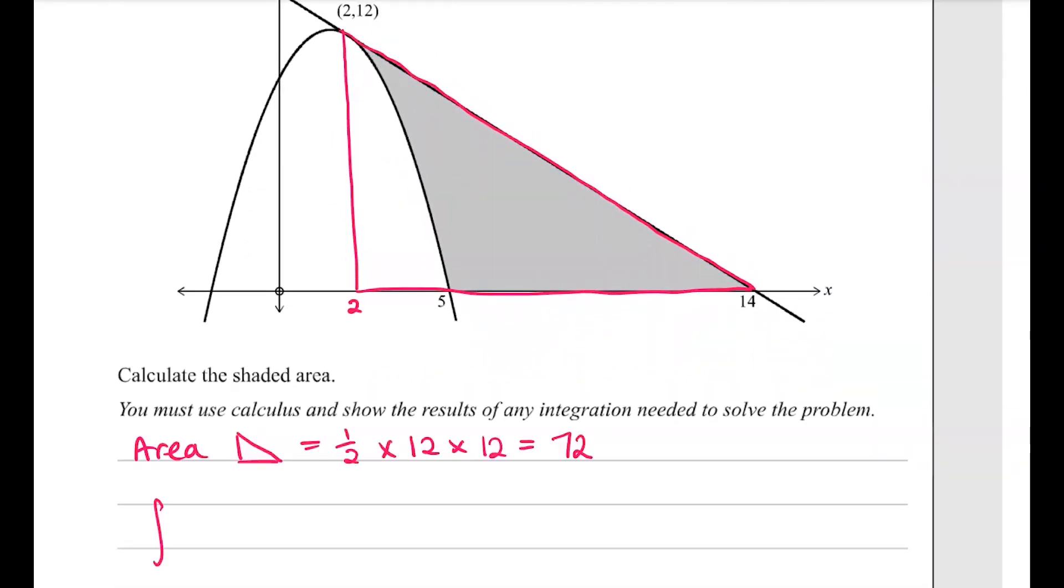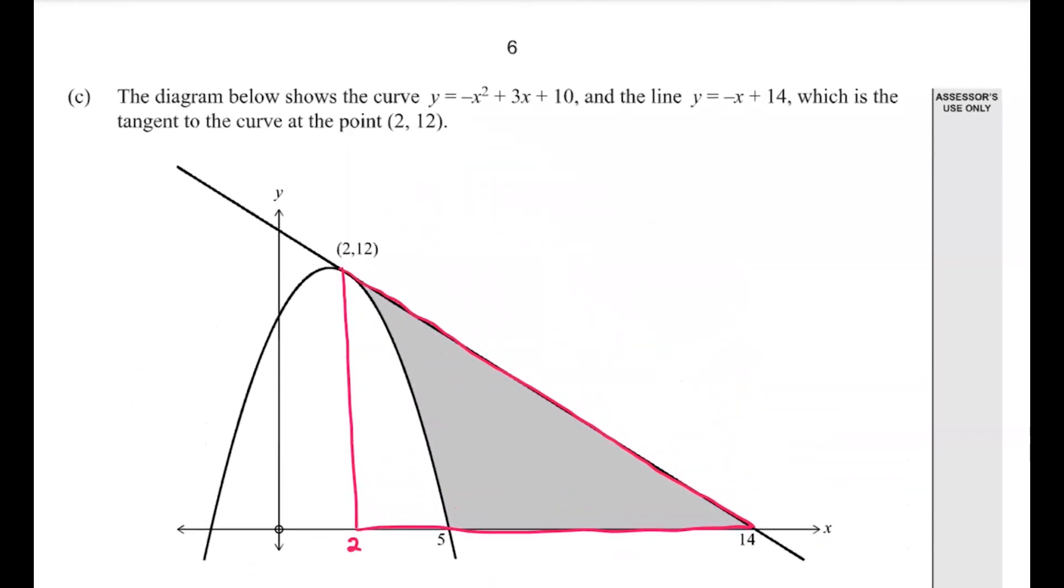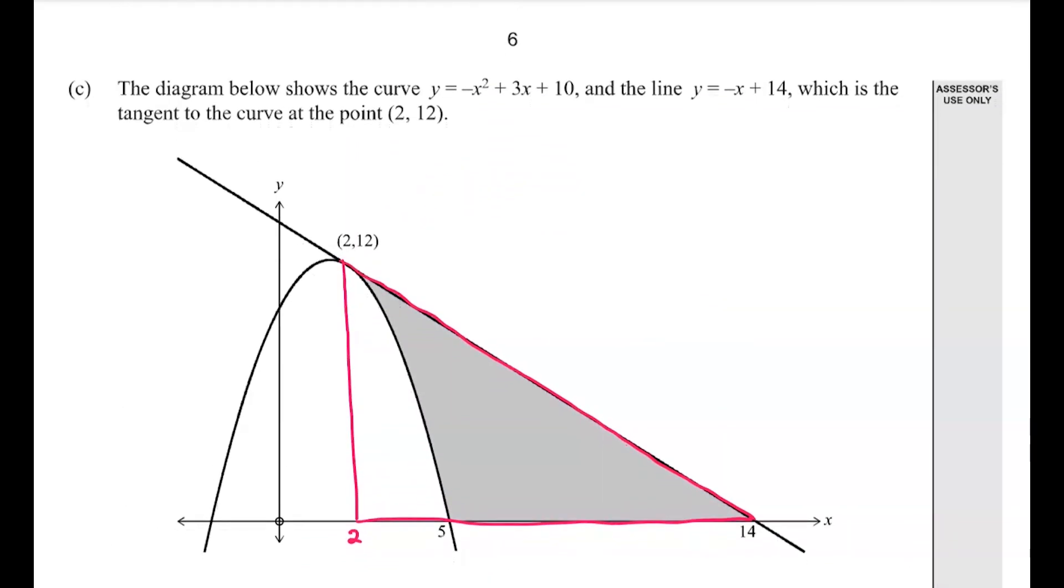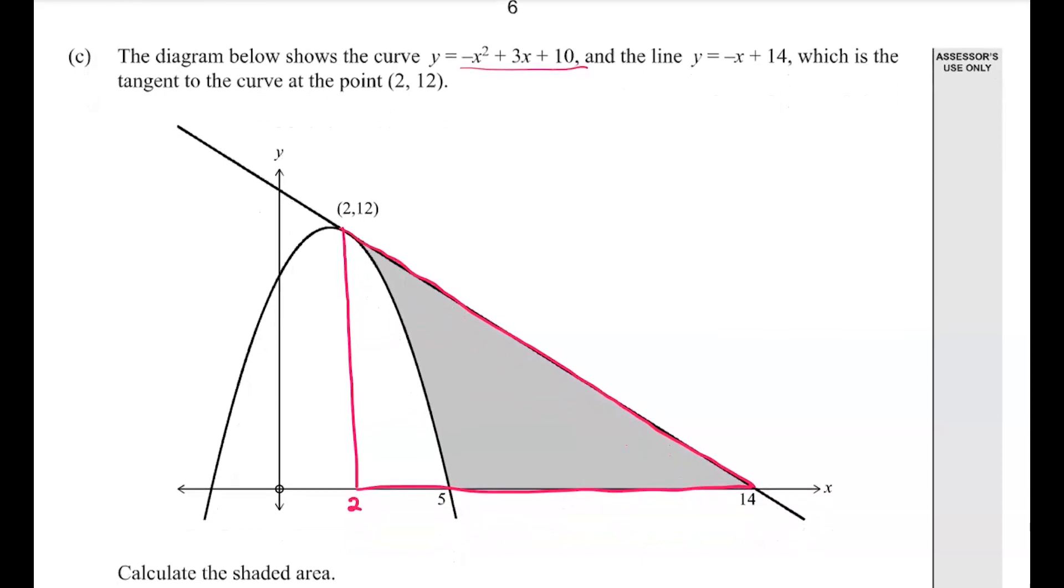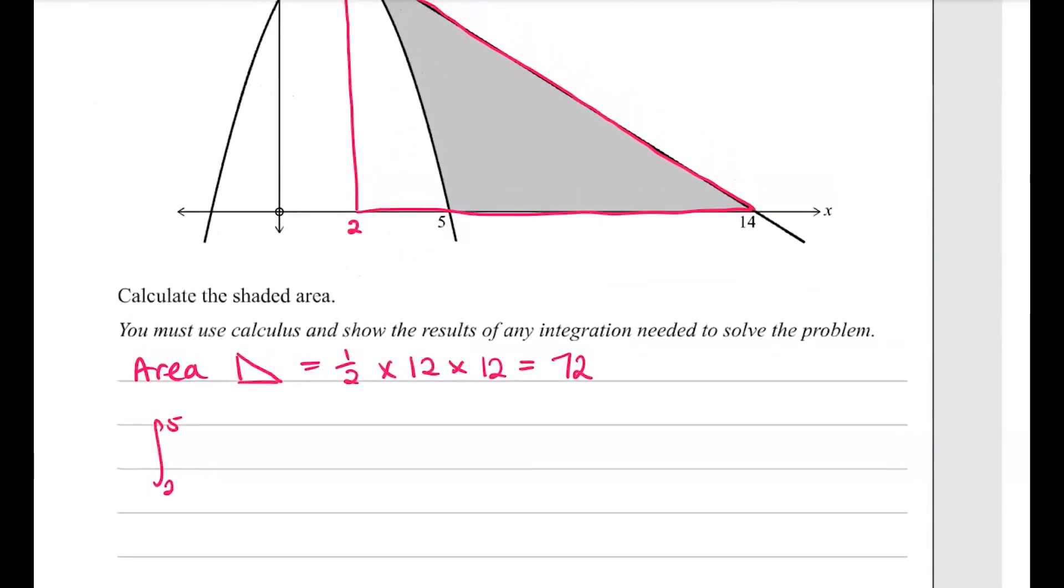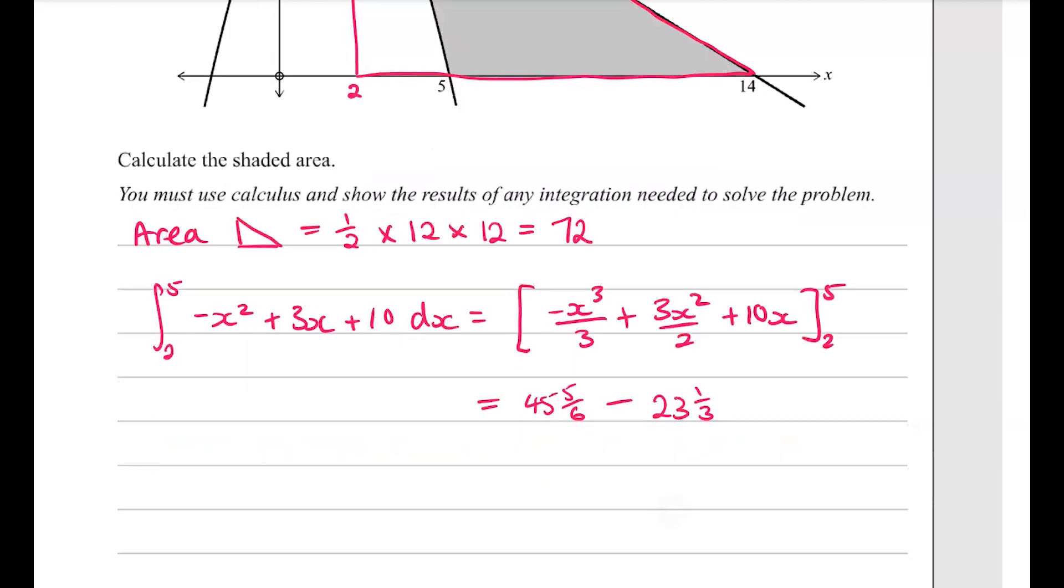The area of the curve will be from 2 to 5. The equation for that curve was up here, so minus x squared plus 3x plus 10, and we integrate each of those terms as follows. Substituting in the values, that gives us 22.5, so the shaded area will end up being 49.5 square units.